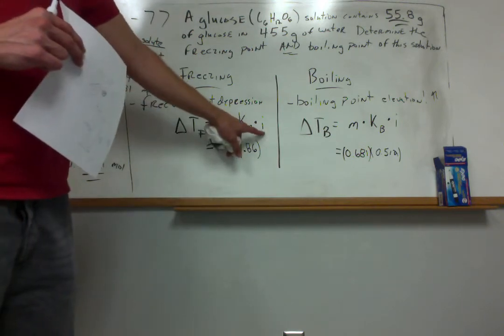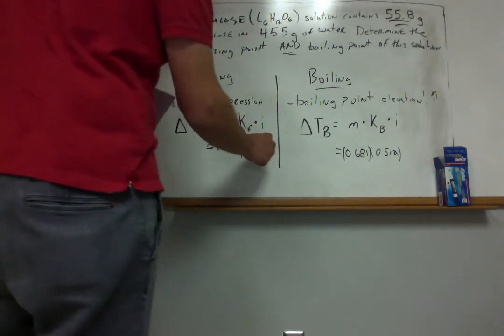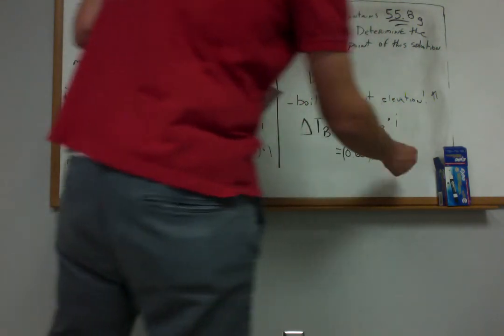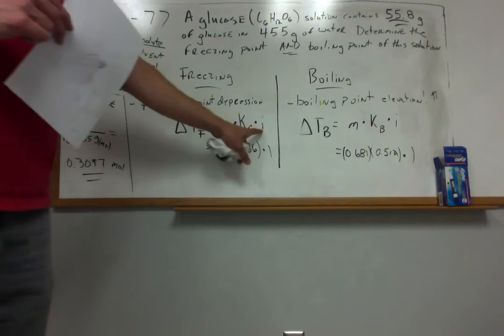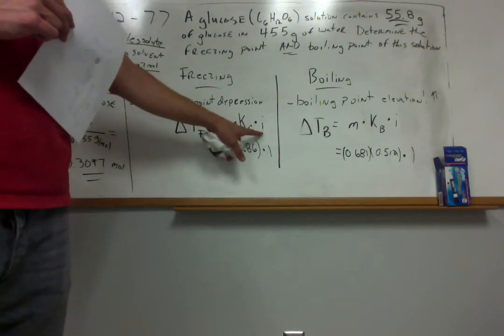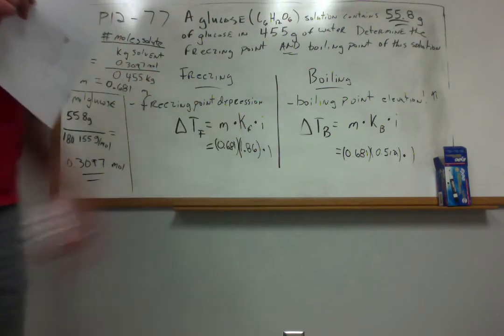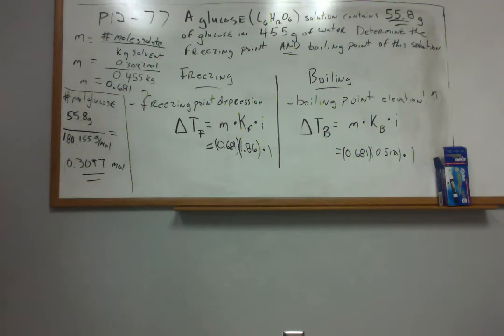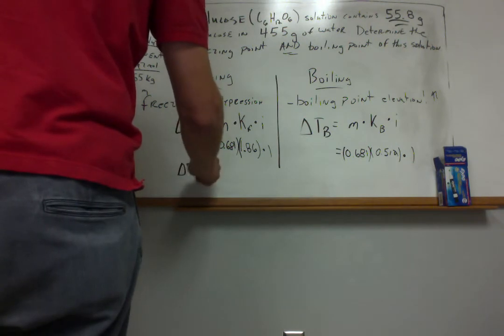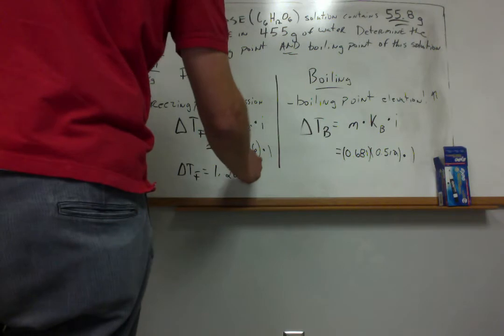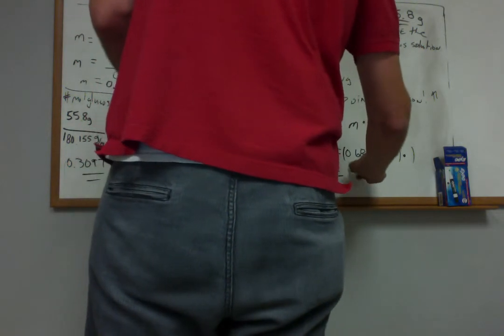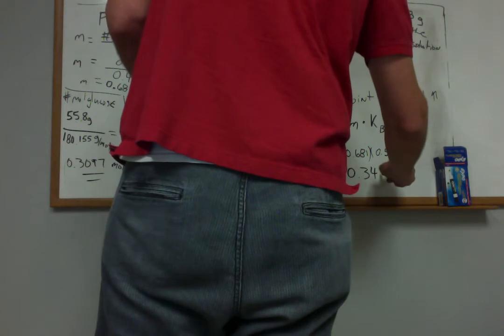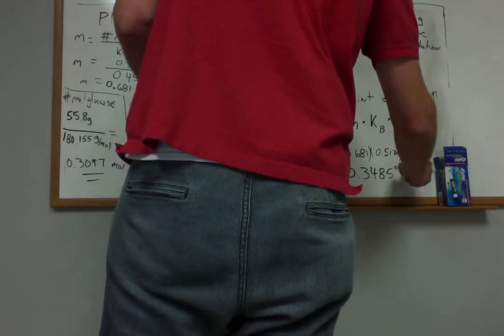Now, I already mentioned that the Van't Hoff factor I for glucose, a molecular compound, is just equal to 1 for both cases. So basically we're multiplying this by 1. It's not really going to play much of a role, but I wanted to include I in the equation just so you don't forget about it. Because that I term is very important for the ionic compounds. If you have multiple ions upon dissolution produced, I will not be equal to 1. And you need to account for that in the mathematics. So it's good to see it from the start when we're working through these sample problems. So if you do the math, delta Tf is 1.266 degrees Celsius. And if you do the math for the other one, delta Tb is equal to 0.3485 degrees Celsius.